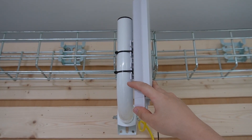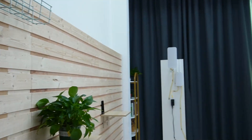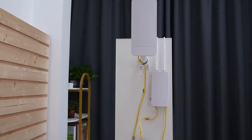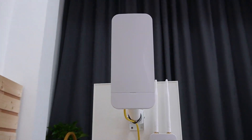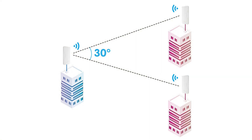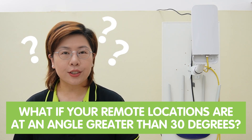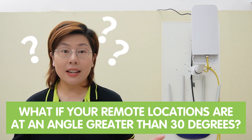Last time, we showed you how to set up a point-to-multipoint wireless network bridge to connect remote locations, and we learned that to ensure a stable connection, the bridges need to be placed within a 30-degree angle. But what if your remote locations are at an angle greater than 30 degrees? That's where things get a bit tricky.